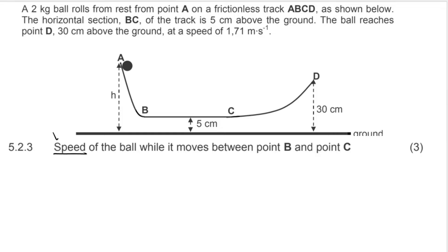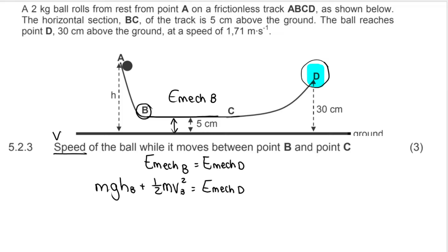The next question asks for the speed v of the ball between B and C. Because B and C are at the same vertical height, the gravitational potential energy is the same at both points, so it doesn't matter which you choose. We set up: E_M(B) = E_M(D) = 8.80 J. Expanding for B: mgh_B + ½mv²_B = 8.80. Mass is 2 kg, g is 9.8, and height at B is 5 cm — convert to 0.05 m.